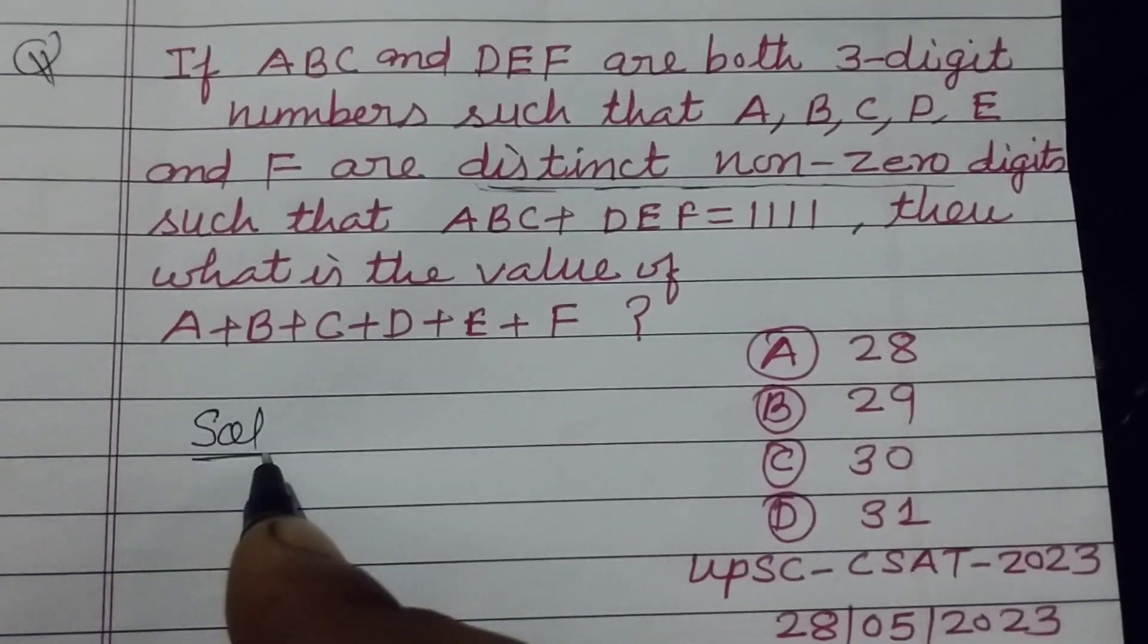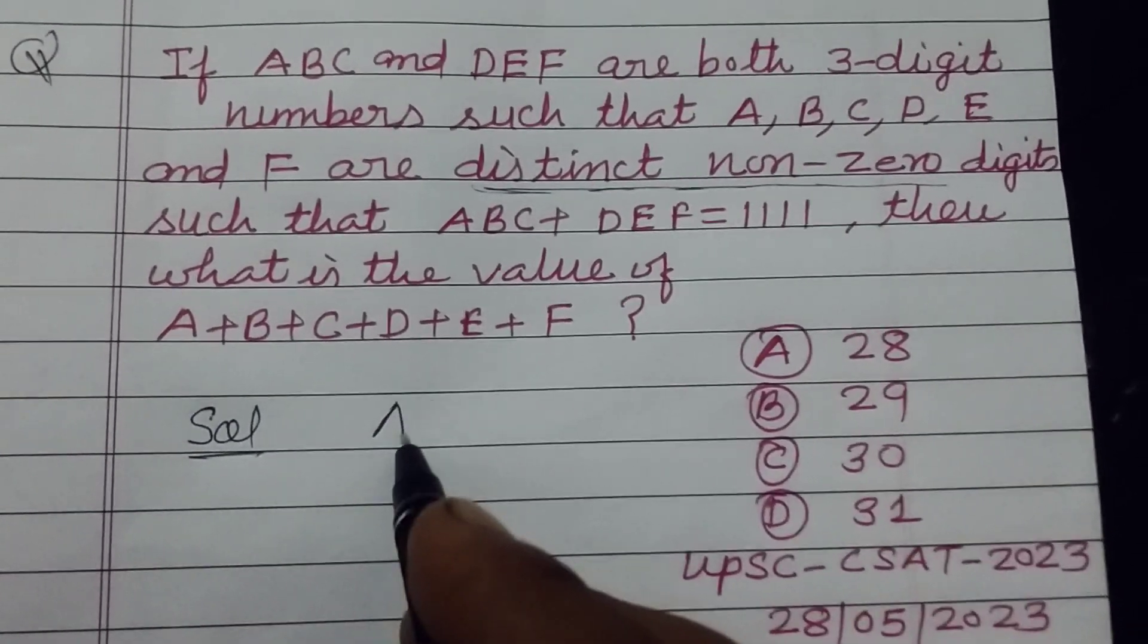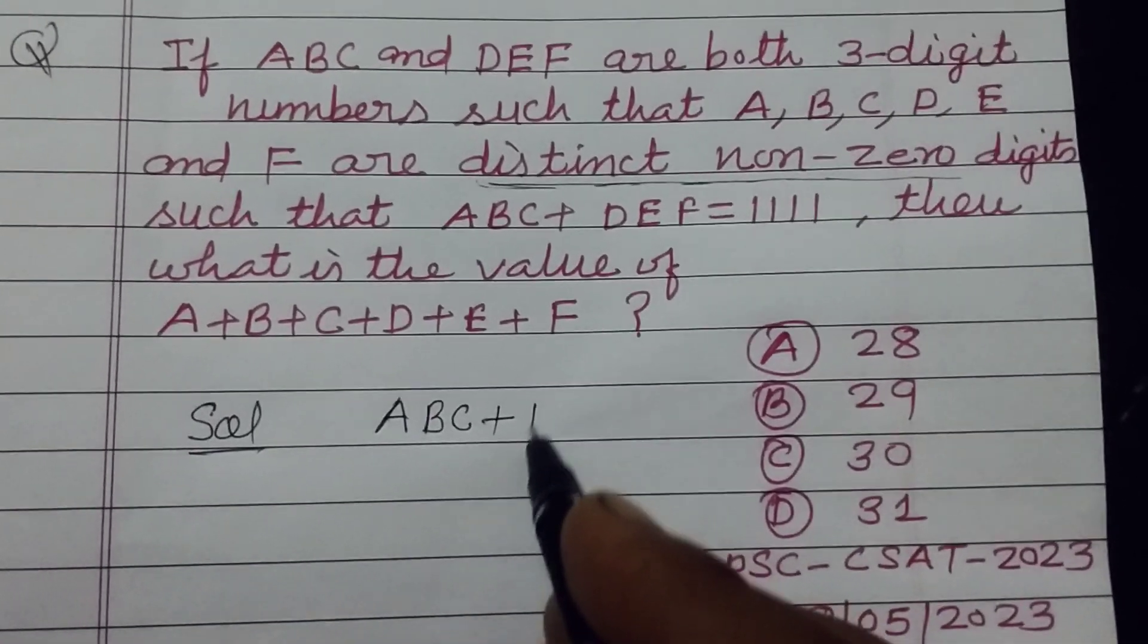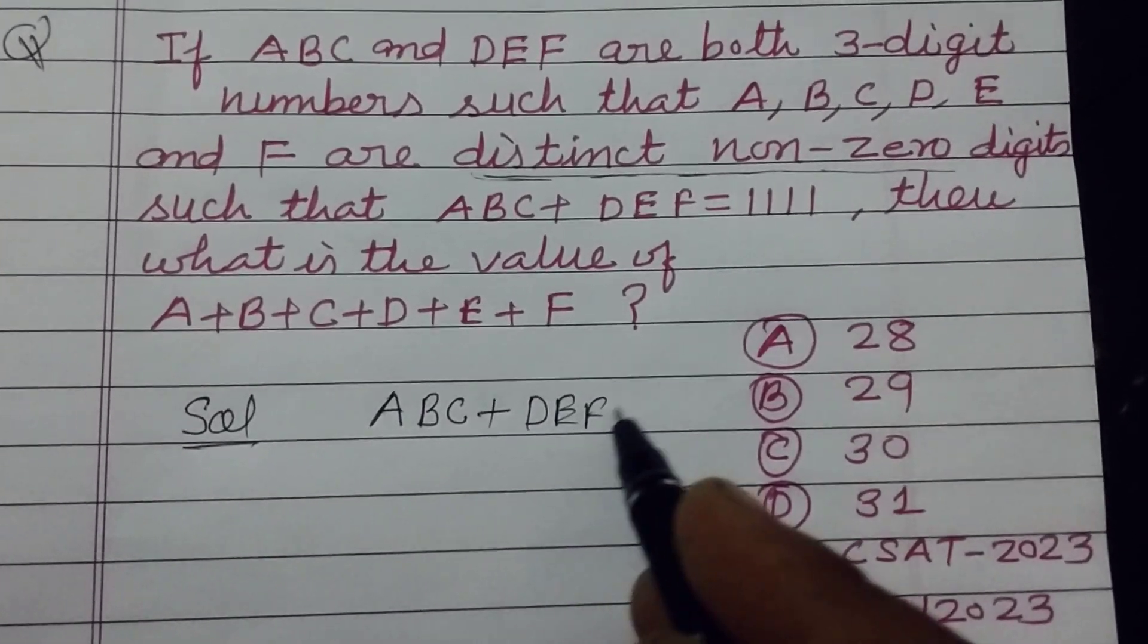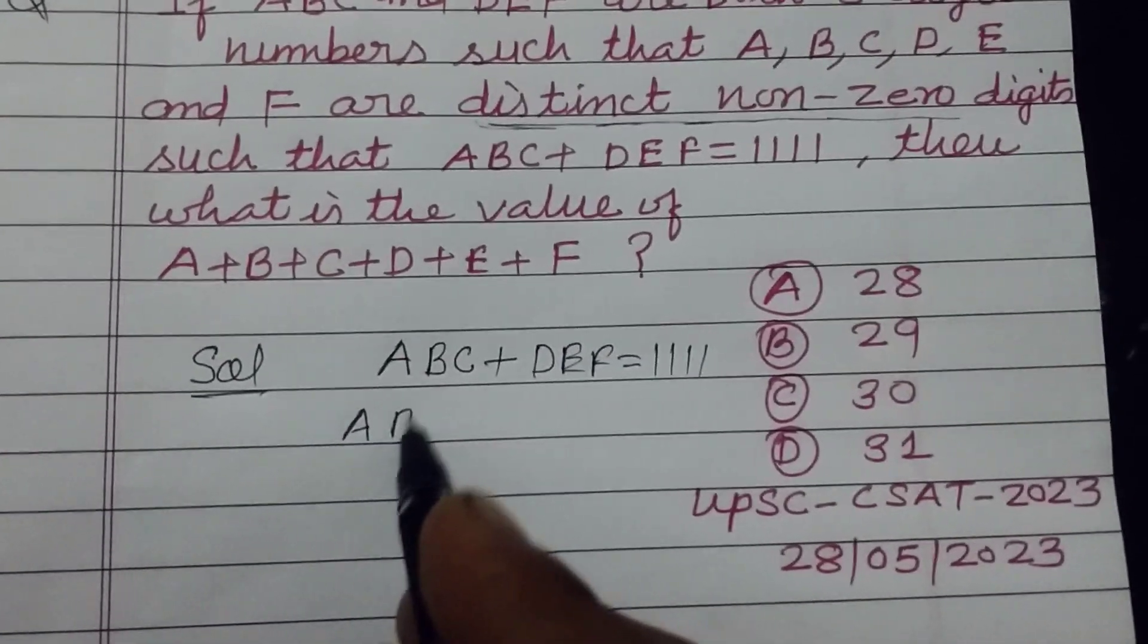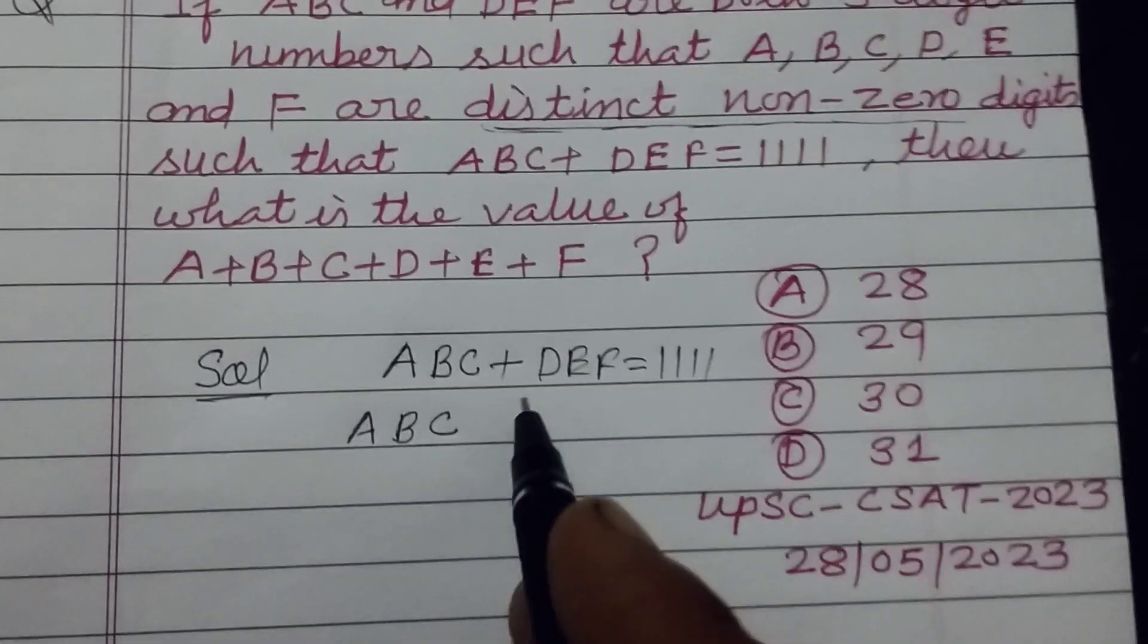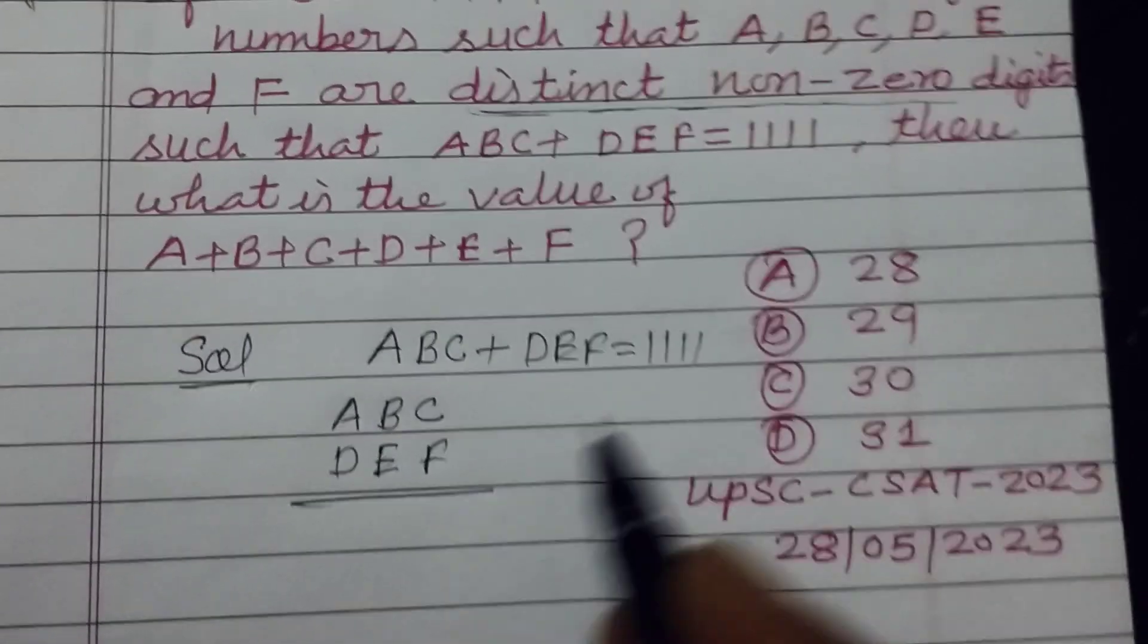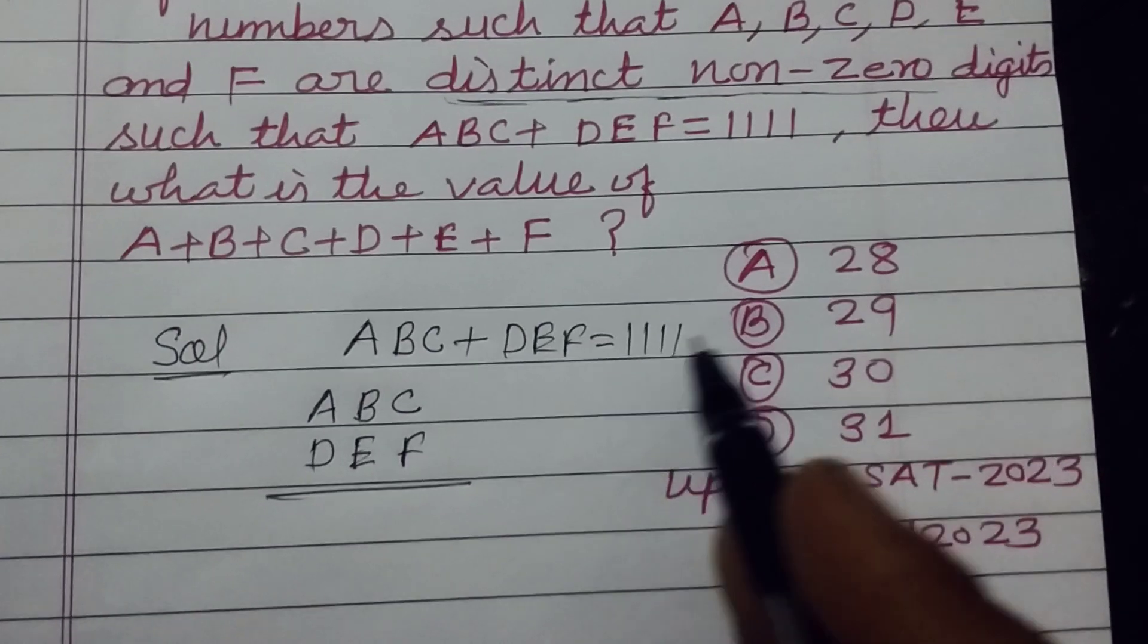So viewers, first we write that sum of ABC and DEF is given to us as 1111. So we make the digits which form these numbers and give the sum 1111.